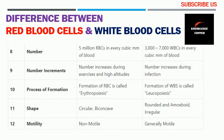White blood cell numbers increase during infection. The tenth basis for comparison is the process of formation — in red blood cells this is called erythropoiesis, while in white blood cells it is called leukopoiesis. The eleventh basis is shape — red blood cells are biconcave and circular in shape, while white blood cells are rounded and amoeboid or irregular in shape.